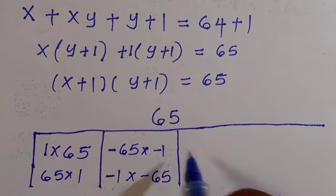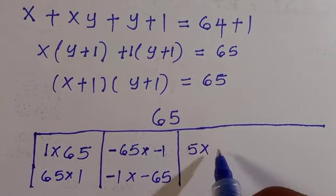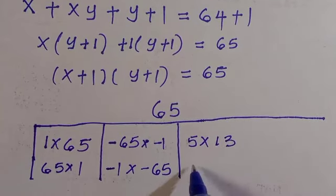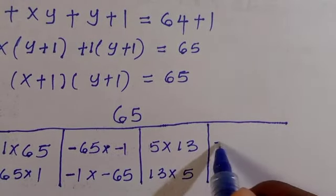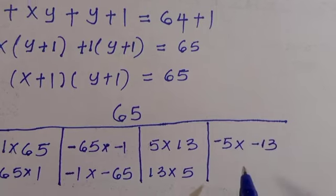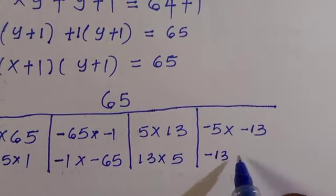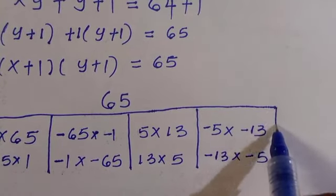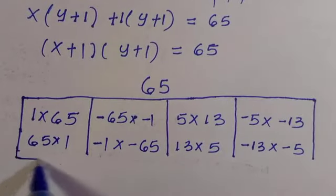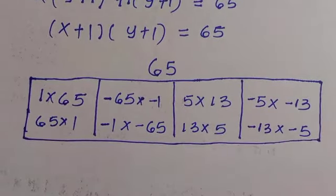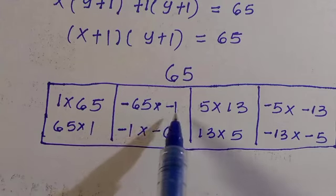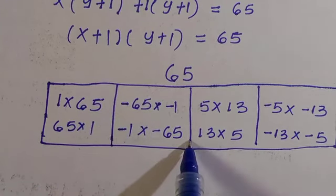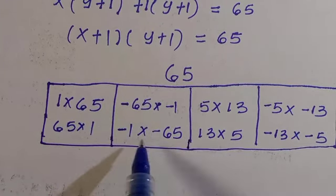We can also have 5 times 13, or 13 times 5, and for the negatives: negative 5 times negative 13, or negative 13 times negative 5. Looking at these, negative 65 times negative 1 will not satisfy the equations, so that case is neglected.